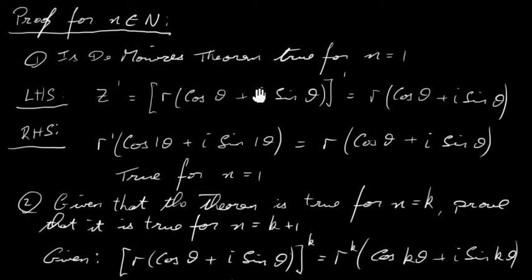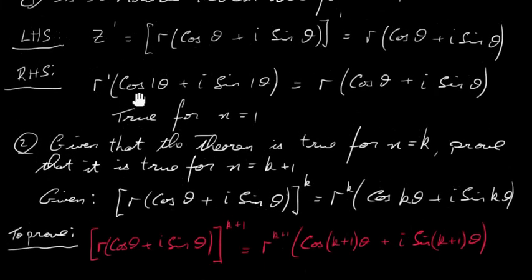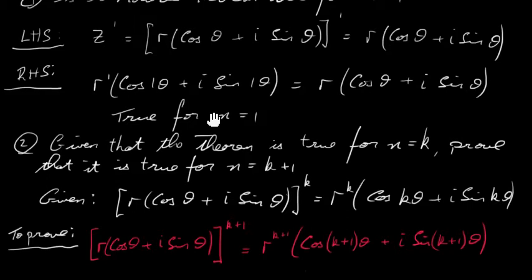The first step is going to be for n as an element of the natural numbers — positive natural numbers: 1, 2, 3, 4, 5, and so on. We're going to start with n = 1. Taking the left-hand side first, z to the power of 1 is just our complex number to the power of 1. Anything to the power of 1 is itself, so we get r(cos θ + i sin θ). The right-hand side is r^1 · cos(1·θ) + i sin(1·θ), which gives r(cos θ + i sin θ). Left and right-hand sides are the same, so it is true for n = 1.